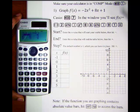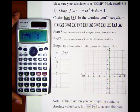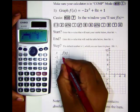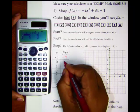The first column is the x column, the second column is the y column or the f of x column. And we see that when x is negative 1, y is negative 9.